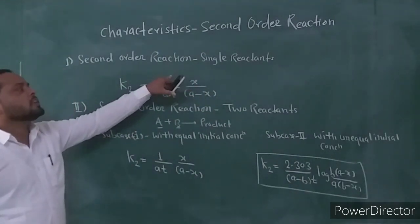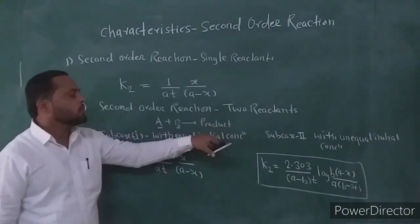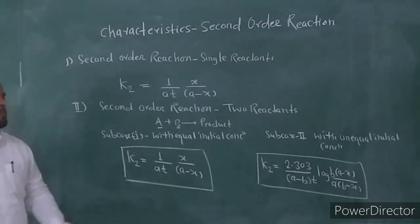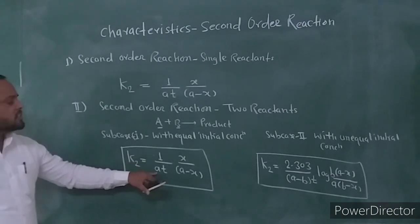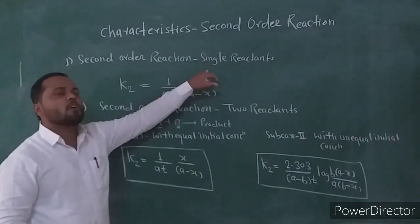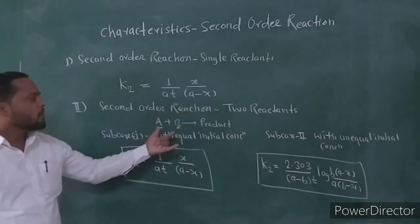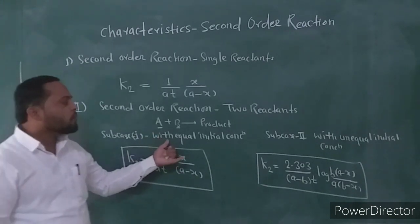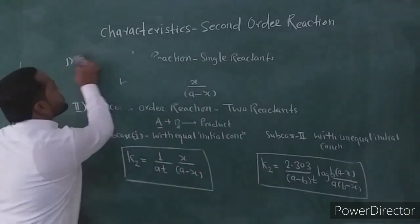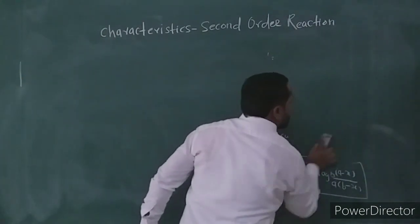The second-order reaction involving a single reactant and two reactants with equal initial concentration both have the integrated rate equation K2 equal to 1 upon A into T, X upon A minus X. In today's lecture, we discuss the characteristics of the second-order reaction.